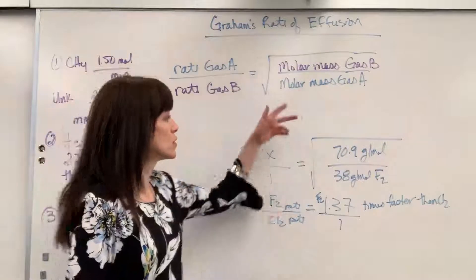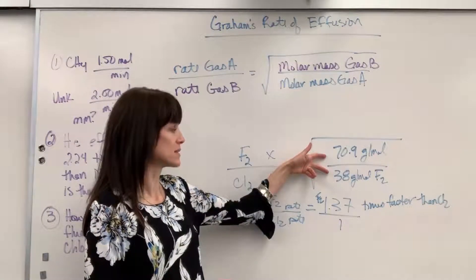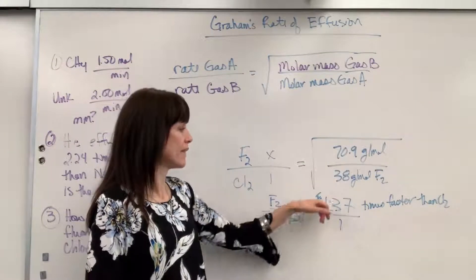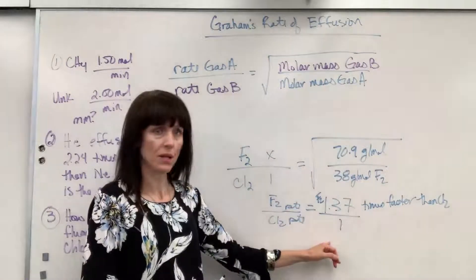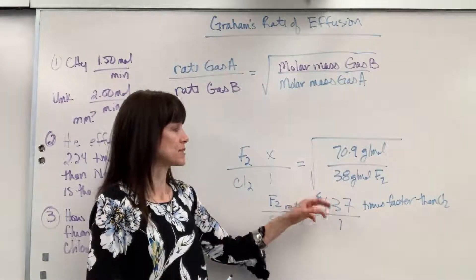So, when you're given two gases, you divide them, take the square root, and that quotient is going to give you how much faster or slower.